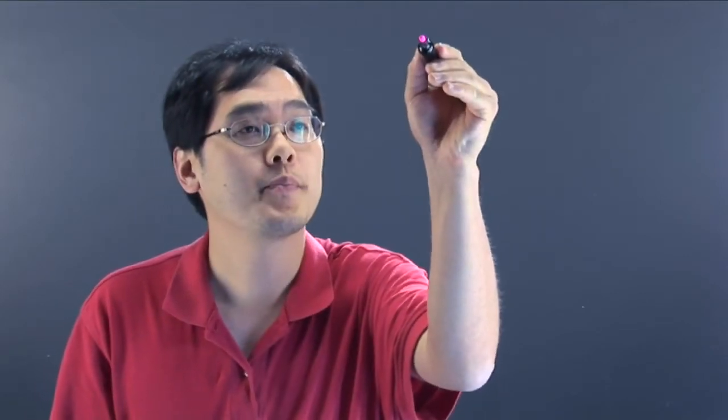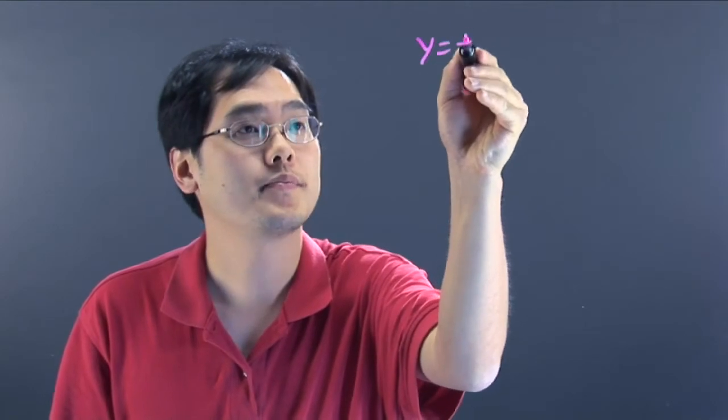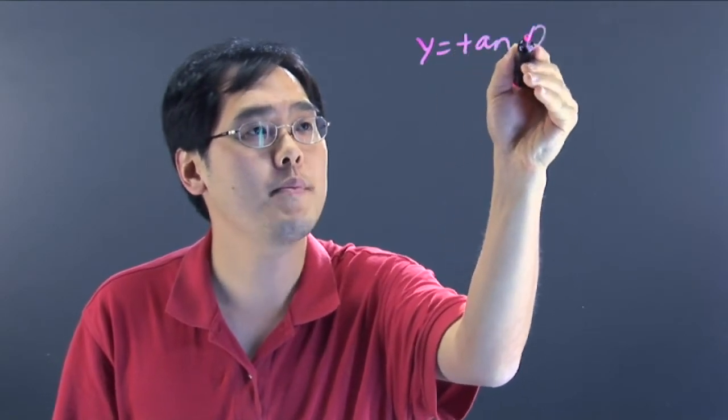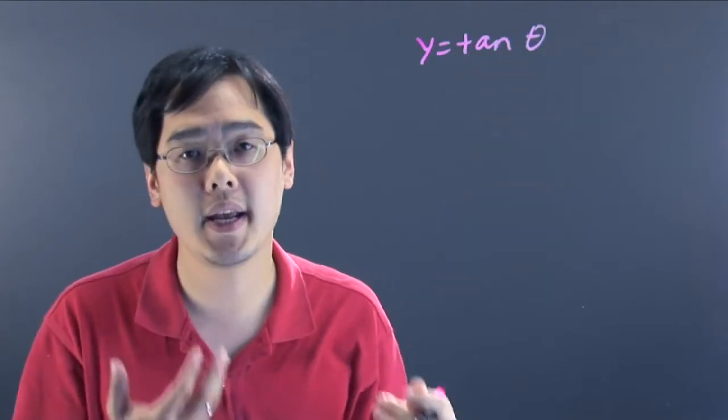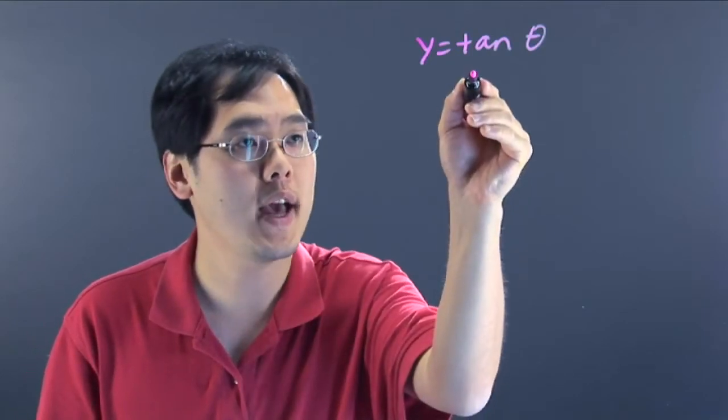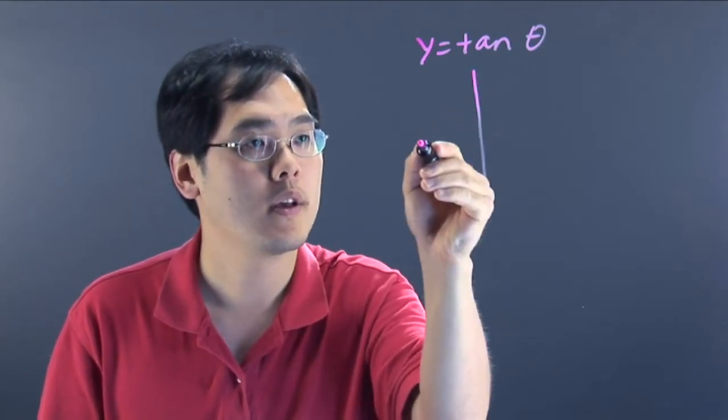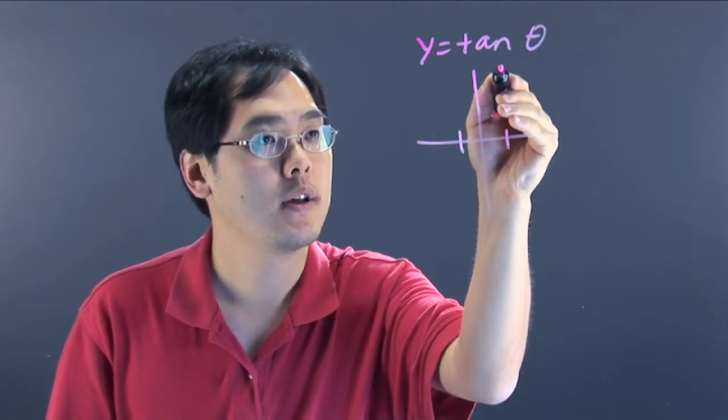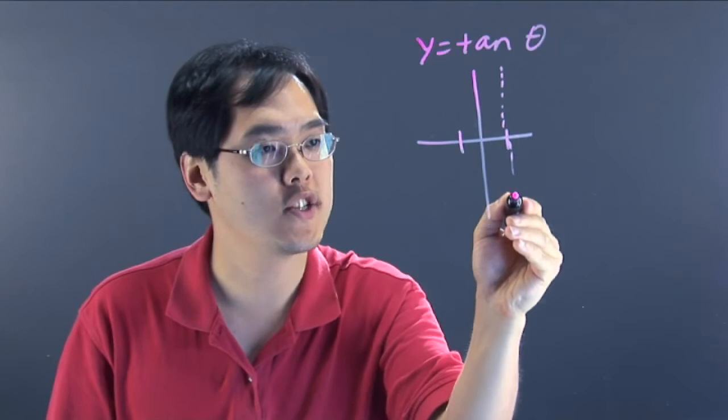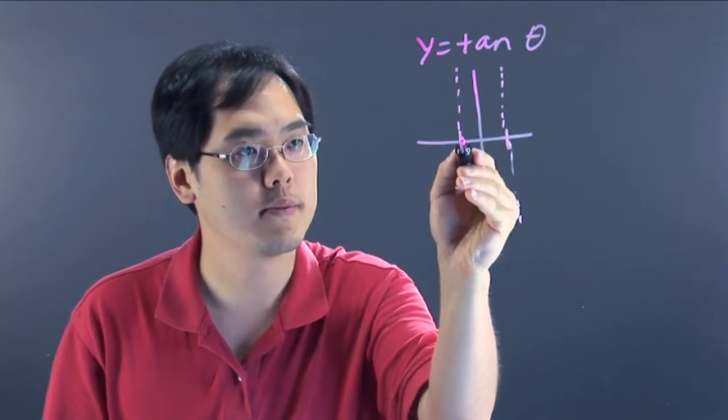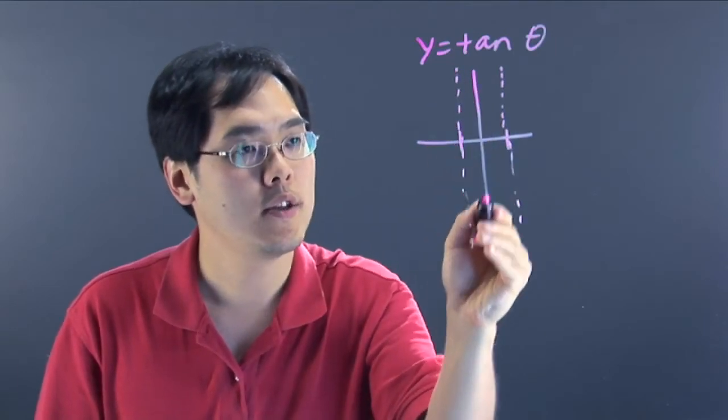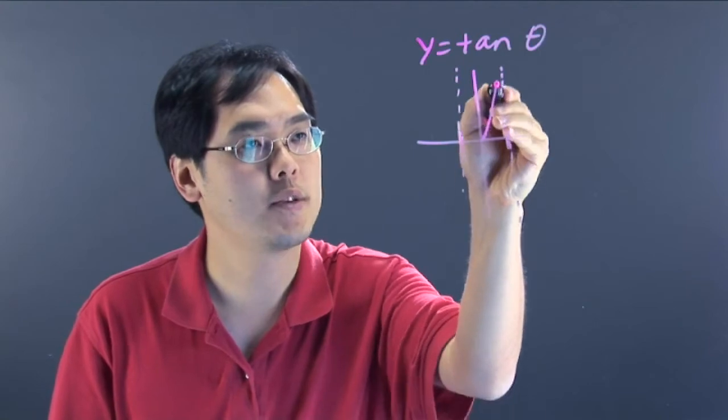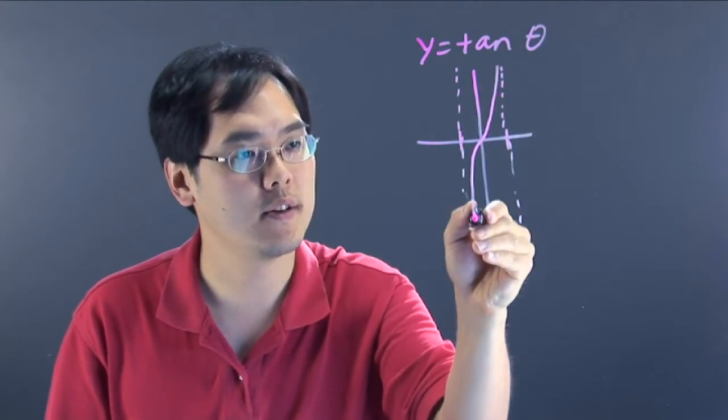So when you have the tangent graph, keep in mind that the tangent graph is a very repeating graph. So for example, if you have a graph for tangent, let me just isolate this for example. A typical cross-section of a tangent graph is it's surrounded by vertical asymptotes and the right tail of the tangent graph typically points up and the left tail tends to point down.